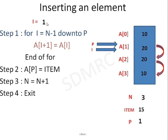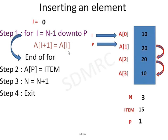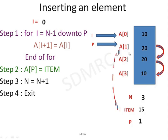Now i is decremented because of the down-to condition. It becomes 0, but it can only go up to p, which is 1. It is going beyond that, so I come out of the for loop and execute end of for. Now I can insert this element onto this location. I execute a[p] = item. Since p = 1, a[1] = 15, so this value is copied to that location.